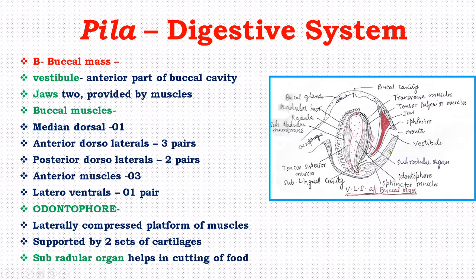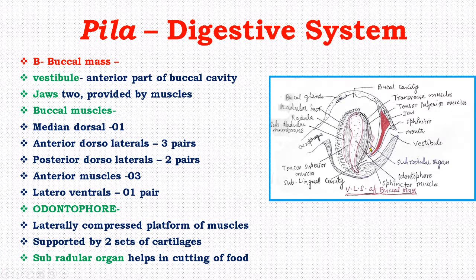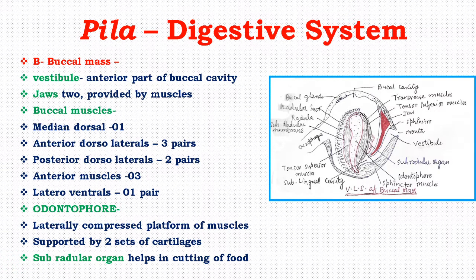Inside the buccal mass, the vestibule is the anterior part of the buccal cavity. Behind the vestibule there are two jaws, which are paired and hang from the roof of the buccal mass. They are provided with muscles, and their anterior edges possess teeth-like projections called denticles for cutting up vegetable food.